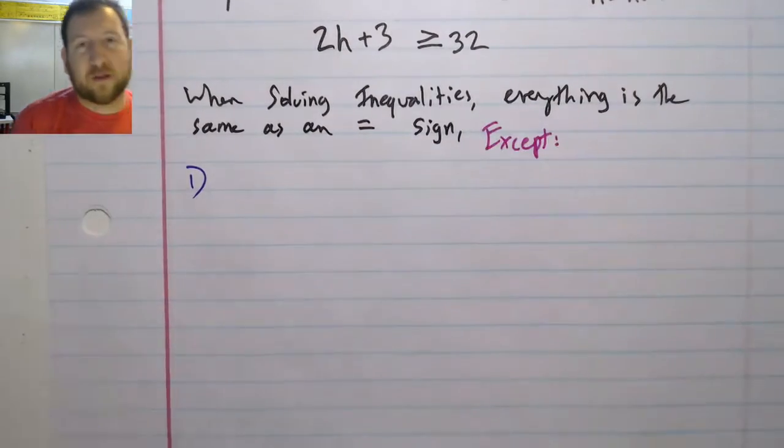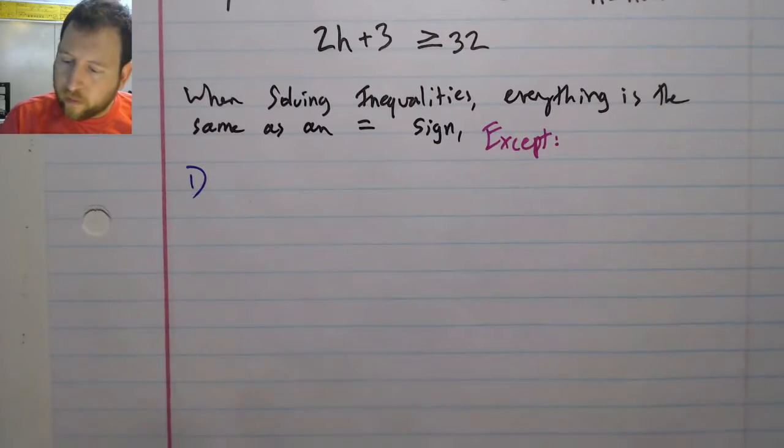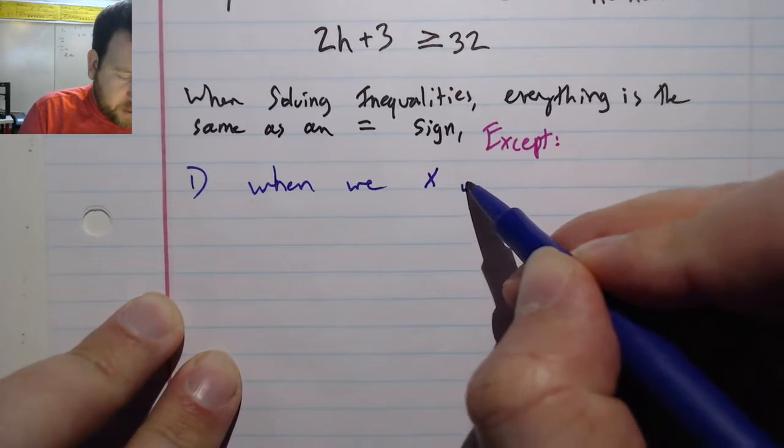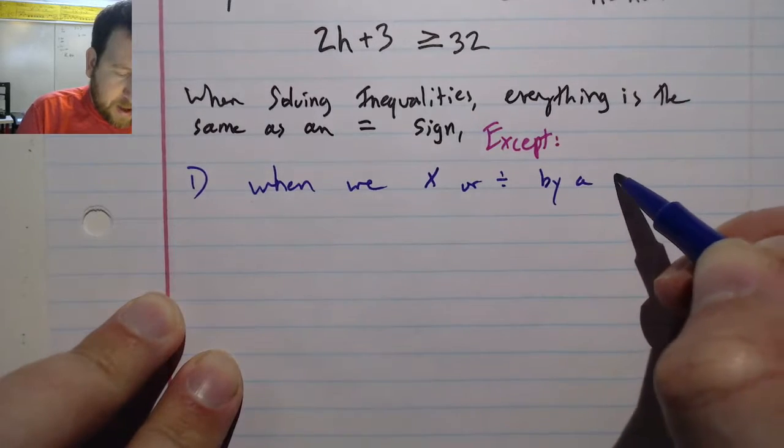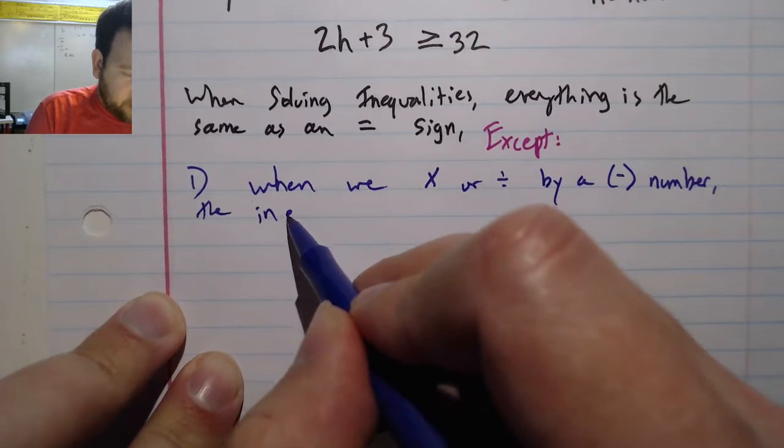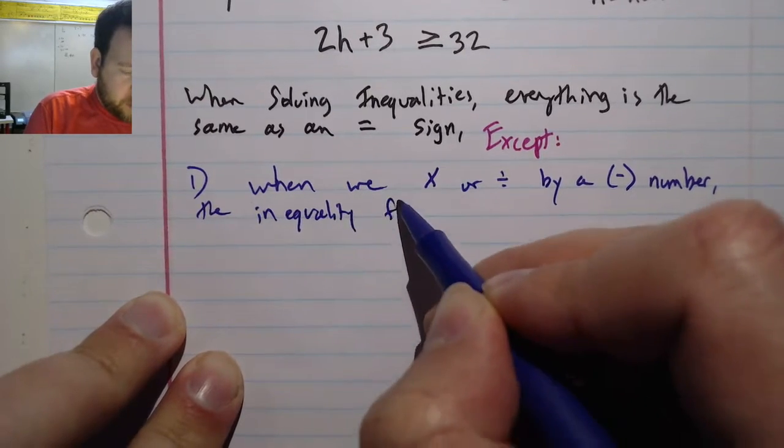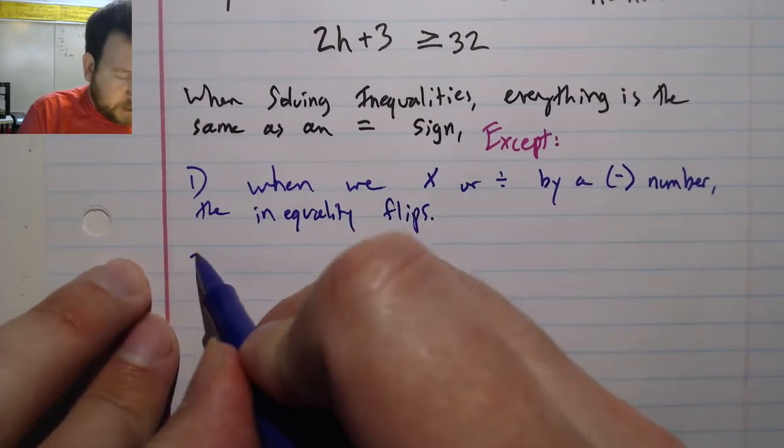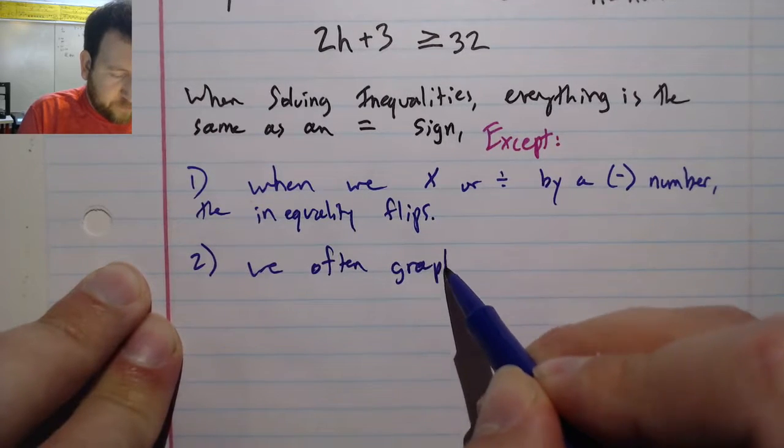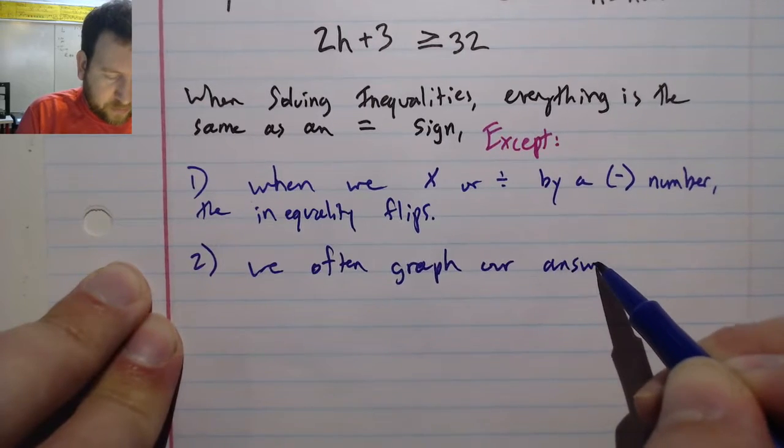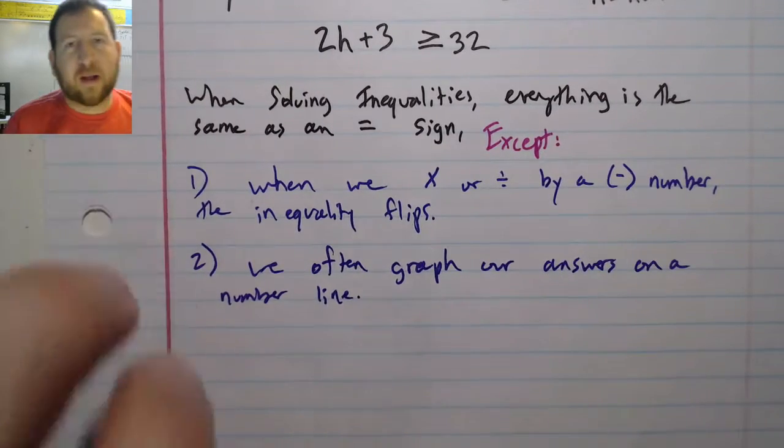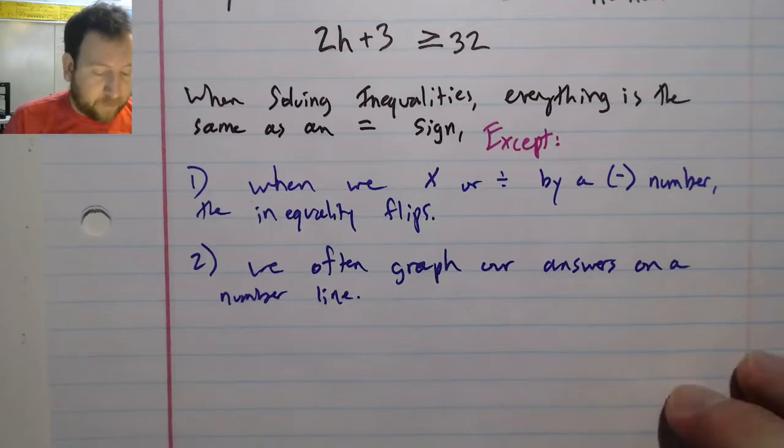First, this is the big trick: when we multiply or divide by a negative number, the inequality flips. Second, we often graph our answers on a number line.